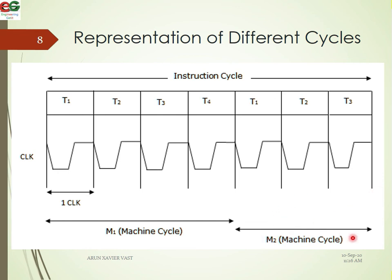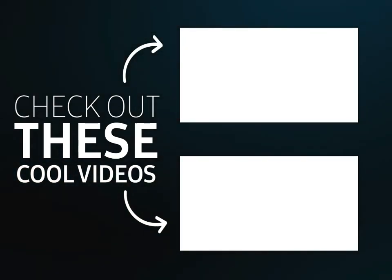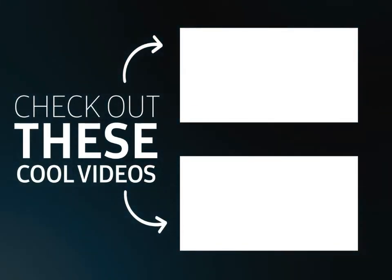M1 and M2 are two machine cycles. In these two machine cycles, we have one instruction cycle. In the instruction cycle, there are one to six machine cycles according to the operation. In this video, we have discussed different types of cycles: the Instruction Cycle, Machine Cycle, Clock, Control Signals, and Status Signals. Subscribe to the channel if you like this video. See you all in my next video with another topic. Thanks.